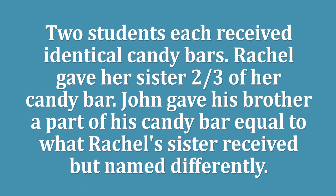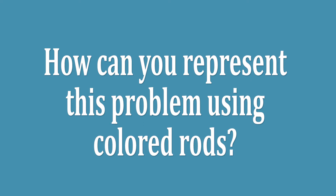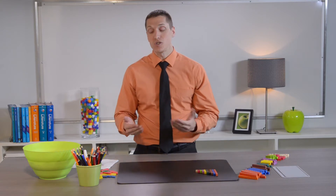Two students each received identical candy bars. Rachel gave her sister two-thirds of her candy bar. John gave his brother a part of his candy bar equal to what Rachel's sister received, but named differently. We know that two students received identical candy bars. That's important because that tells us right away the candy bars they received were the same size. This means that we're dealing with same-size wholes.